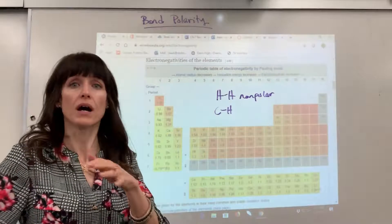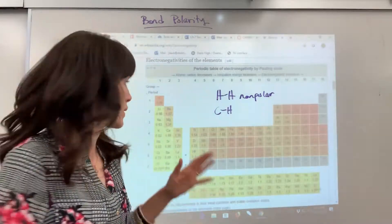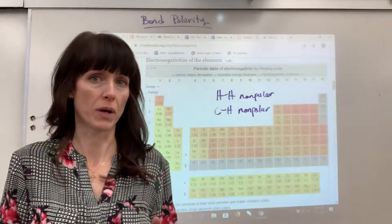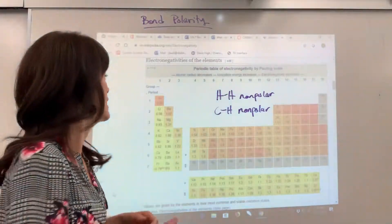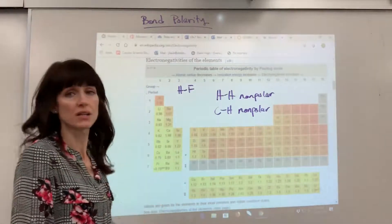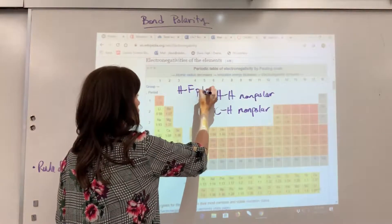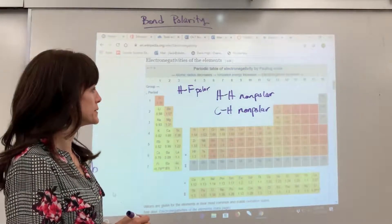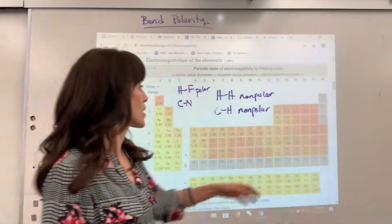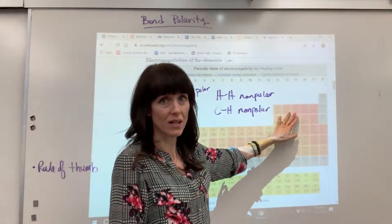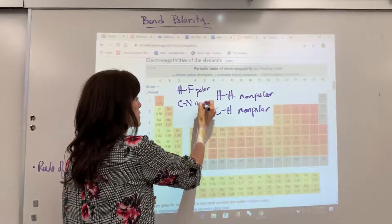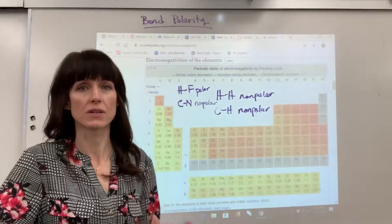Carbon-hydrogen: just memorize this one — we automatically say it's nonpolar. There's no partial negative, no partial positive. For hydrogen-fluorine: huge difference between hydrogen and fluorine — definitely polar. For carbon-nitrogen: they're right next to each other on the periodic table, so their electronegativities are similar enough — nonpolar.